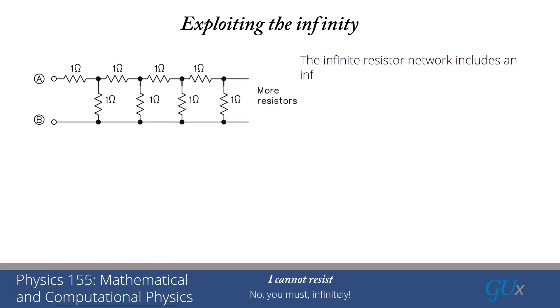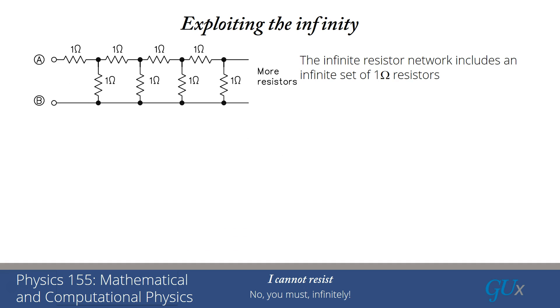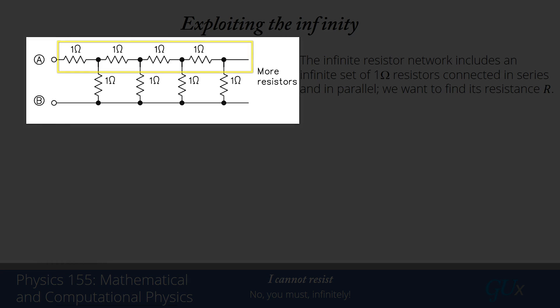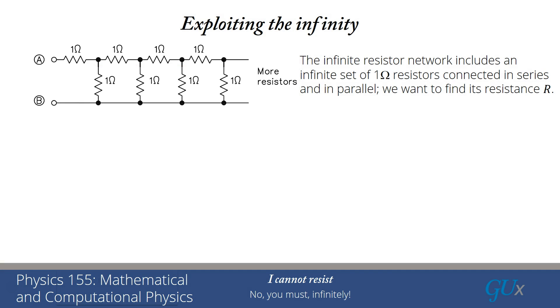Let's take a look at this infinite resistor network. It includes an infinite set of one-ohm resistors that are connected both in series and in parallel. The series ones are along the row extending in the top part of the diagram and the parallel ones are the vertical ones extending downwards, and we want to find the total resistance R for the system.